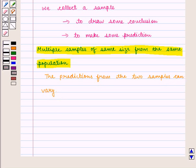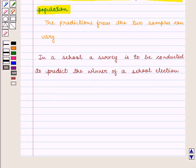Now, we shall determine the variations in the estimate or prediction. Let us take an example. In a school, a survey is to be conducted to predict the winner of a school election.